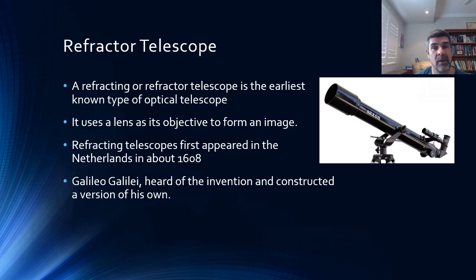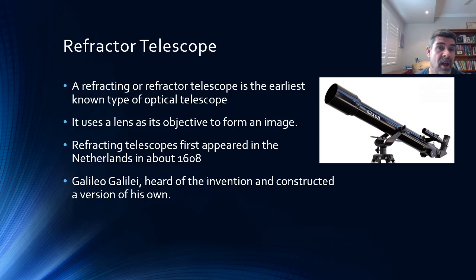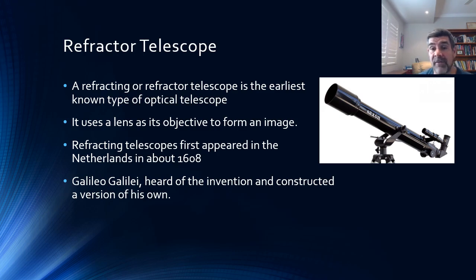What we're going to be talking about is telescopes, and there are two types: optical and radio. Both of these telescopes rely on detecting components of the electromagnetic spectrum. First, we're going to have a look at the refractor telescope.